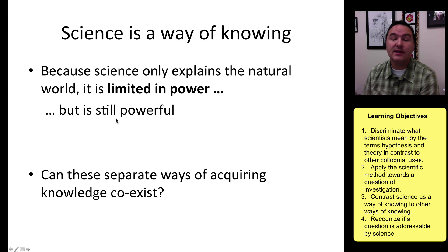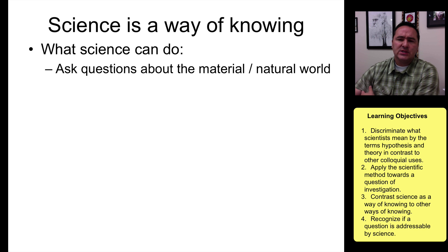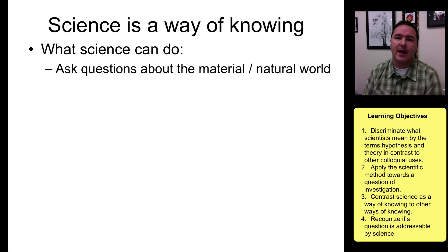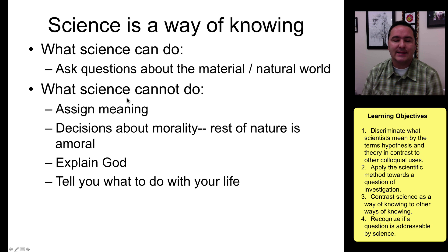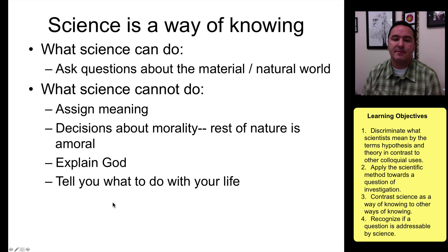Even though science is limited, it is still very powerful, especially at explaining the natural world. One can gain knowledge in art and also gain knowledge in science — these separate ways of acquiring knowledge can coexist. Science can ask questions about the natural world, but what science cannot do is assign meaning to things, make decisions about morality, explain God, or tell you what to do with your life. For those questions, you would want to go to the other ways of gaining knowledge.